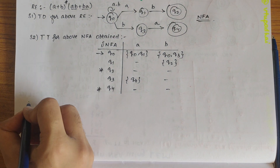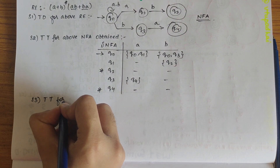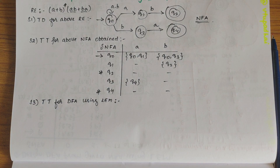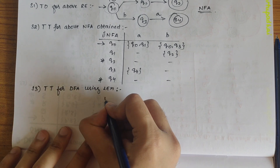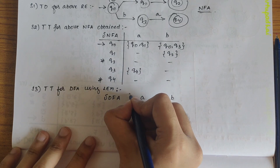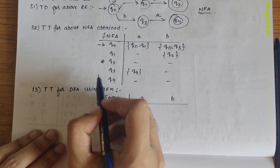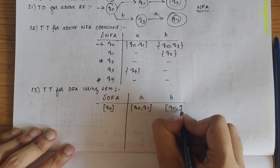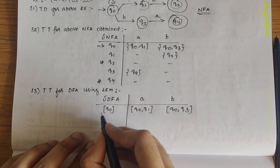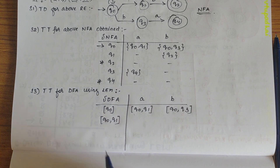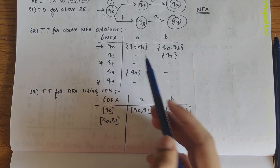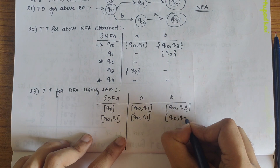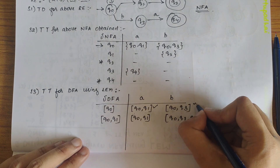Our next step is to draw the transition table for the DFA using the lazy evaluation method. In lazy evaluation, we first write down the initial state in square brackets. We start with {Q0, Q1}: on A it gives {Q0, Q1} union nil, which is {Q0, Q1} itself; on B it gives {Q0, Q2, Q3}. So {Q0, Q1} is defined. Now let's define {Q0, Q3}.